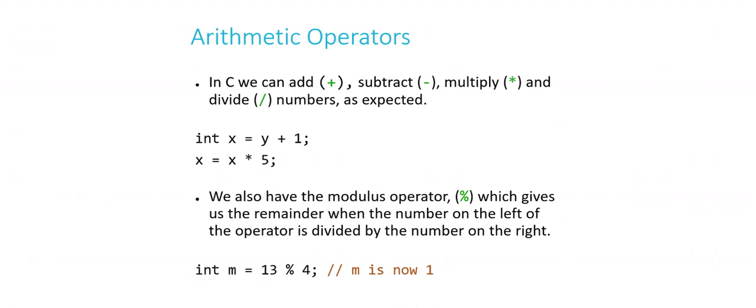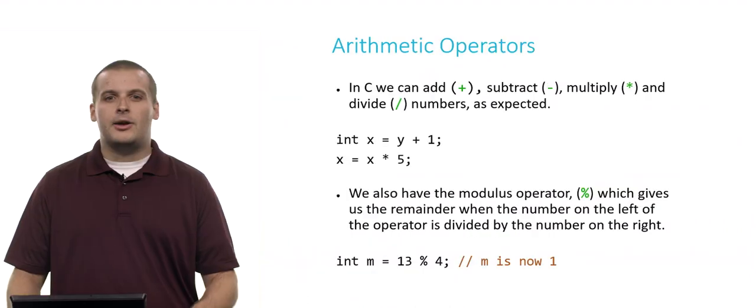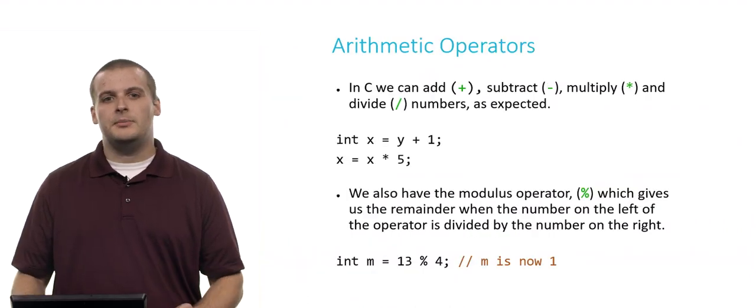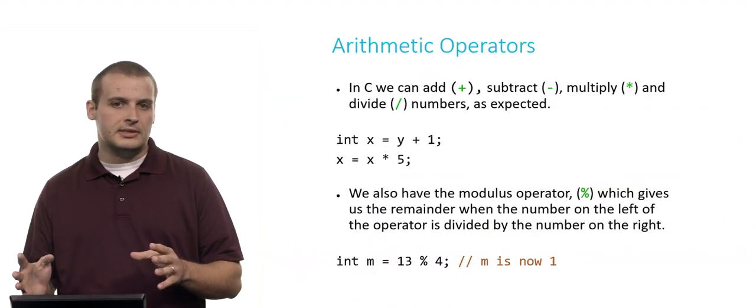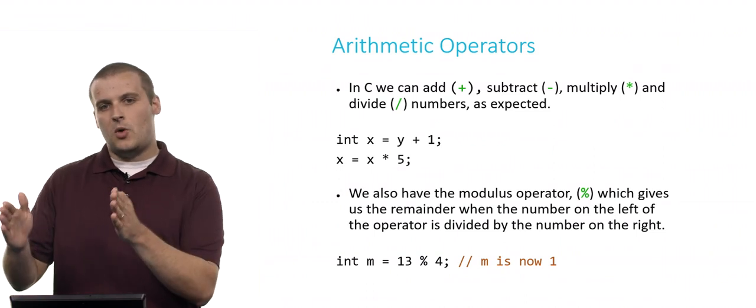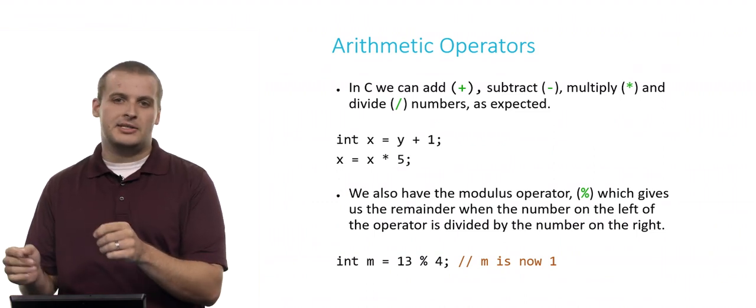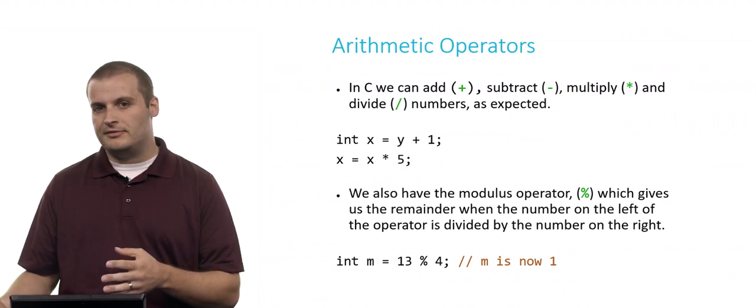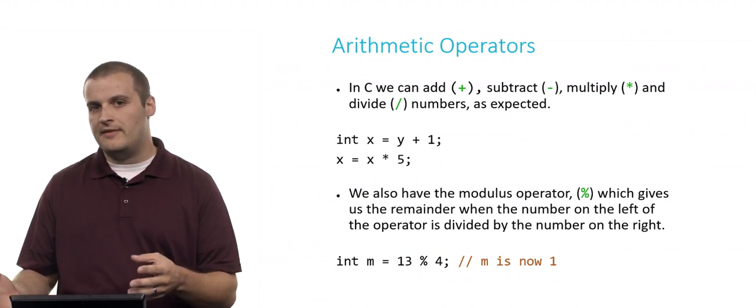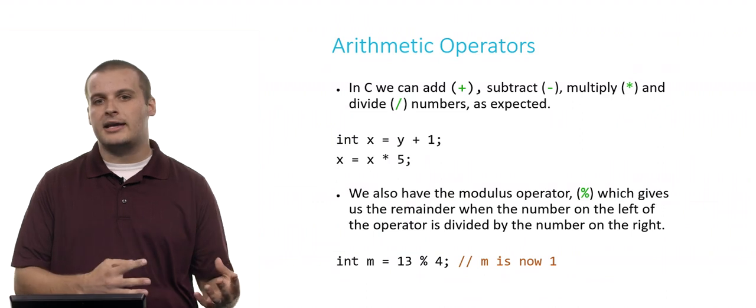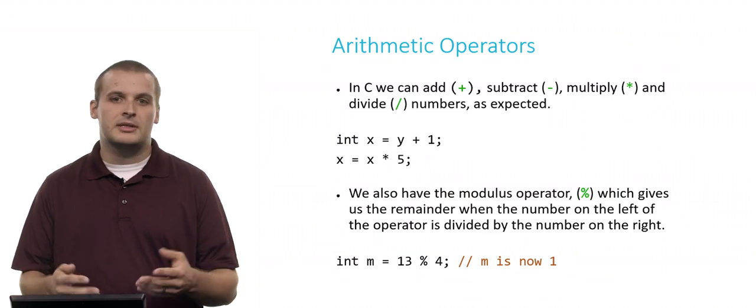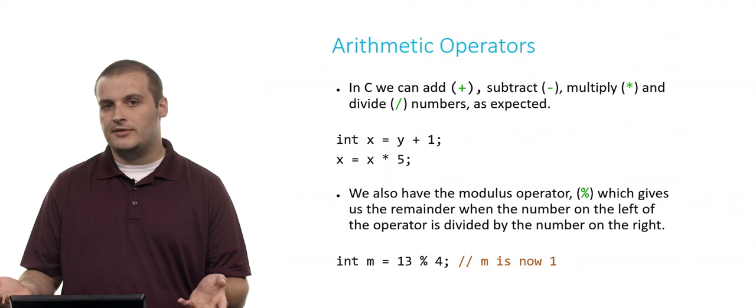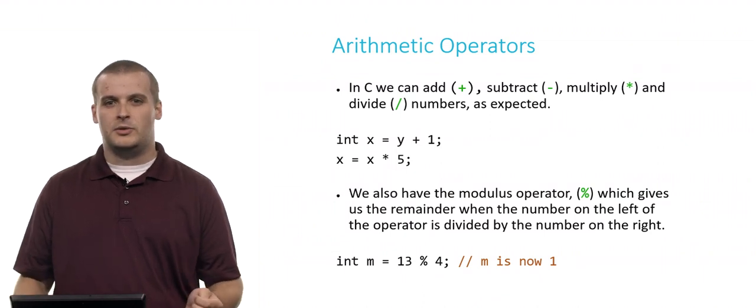So x equals x times 5. x was 11. So x equals 11 times 5, or 55. So if you said 55, you'd be right. Now, it's maybe a little confusing. But the way that assignment works in C is the value on the right gets assigned to the value on the left. So first we evaluate x times 5. So 11 times 5 is 55. And then we store that value in x. The 11 that was there before is now overwritten. So x's value is now 55. Hopefully that's fairly straightforward.